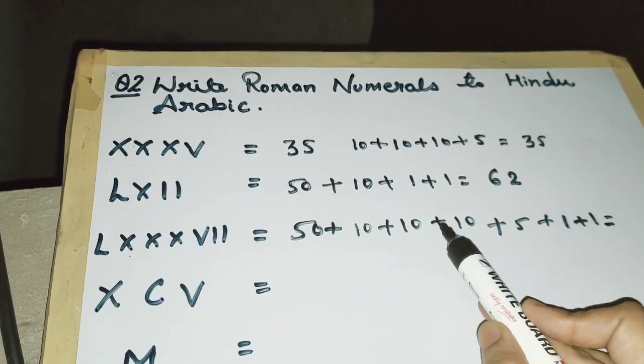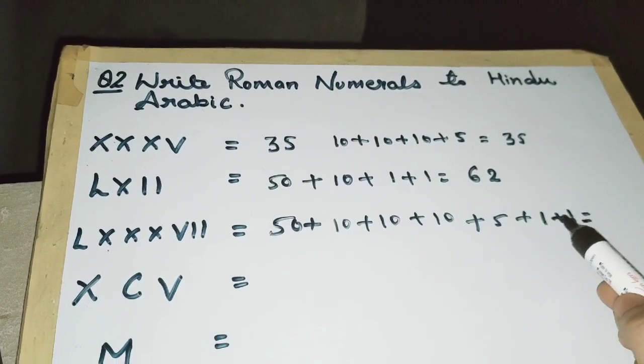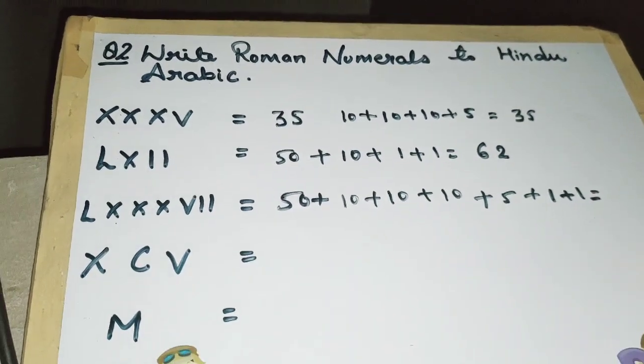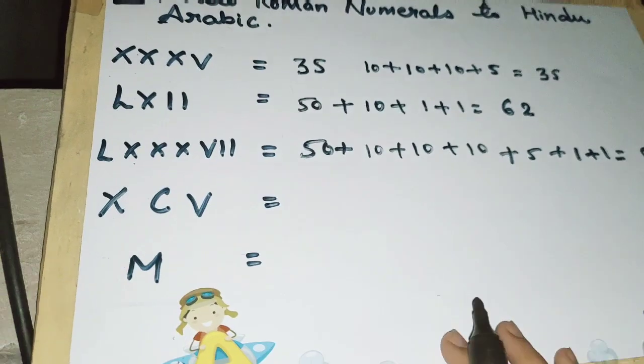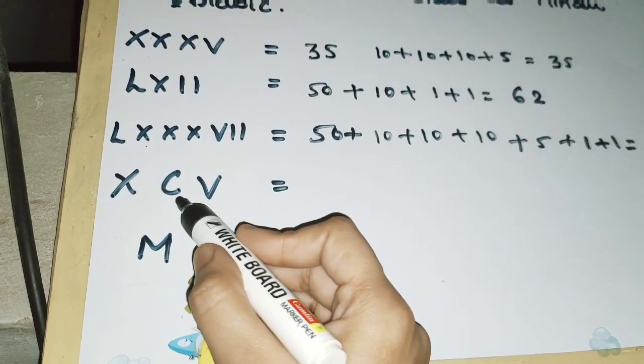Coming to next, this is XCV. That means 100 minus 10, so this will be 90